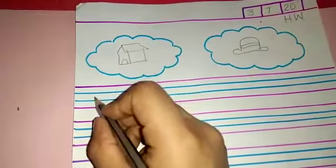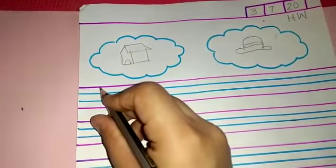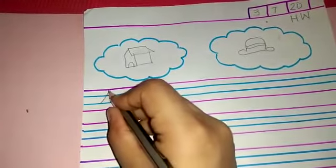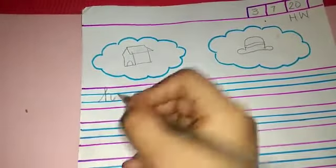Now I will tell you how to write cursive alphabet H. Start from the third line. 1, 2, 3. Go upward. Come down. Take a small turn and kick.